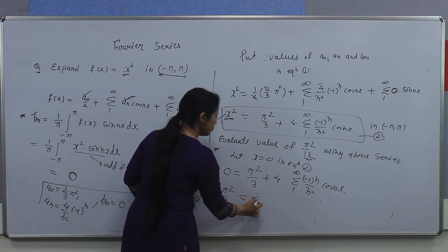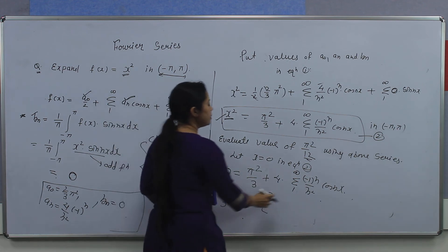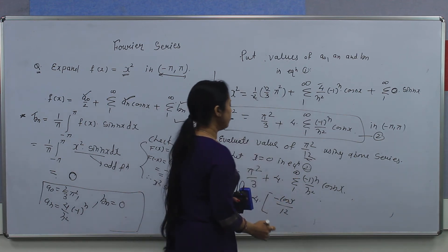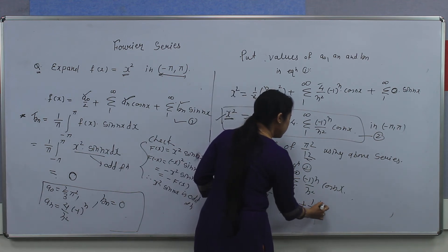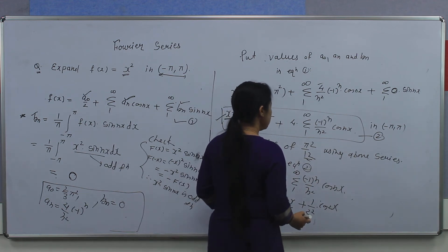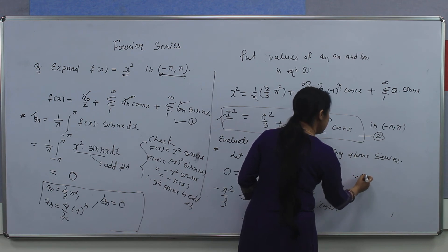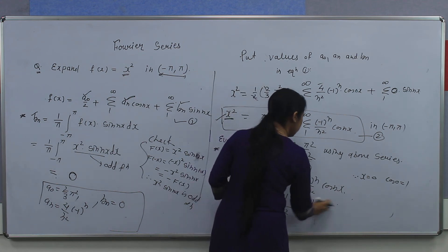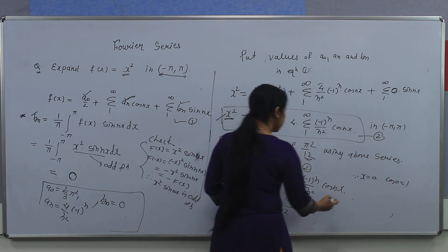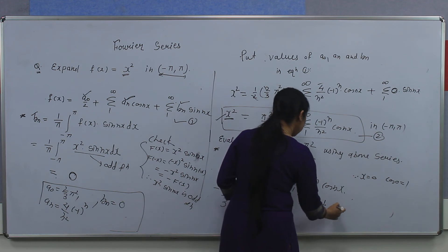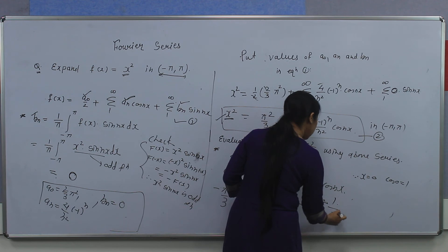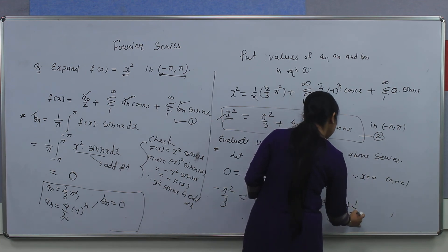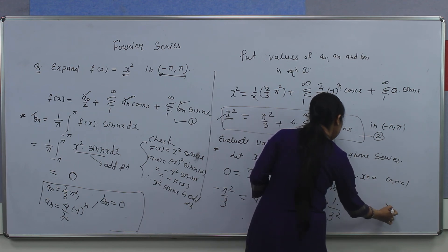So it can be written as minus π²/3 equals 4 times the summation. Putting in values: when n equals 1, it will be minus cos(x) by 1 squared; if we put n equals 2, it will be plus 1 upon 2 squared times cos(2x). Since x is 0, cos(0) equals 1, so we write 1 upon 1 squared, 1 upon 2 squared. For n equals 3, it will be minus 1 upon 3 squared times cos(0), which is 1; for n equals 4, it will be plus 1 upon 4 squared, and so on up to infinity.